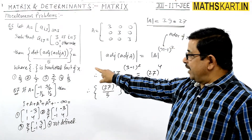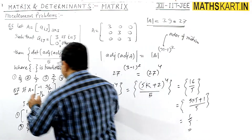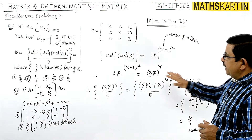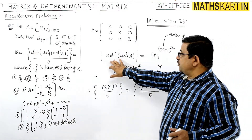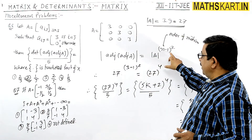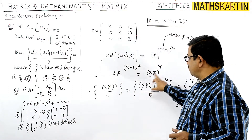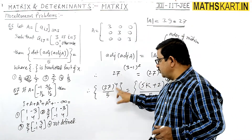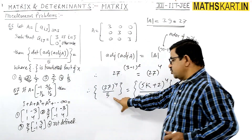Checking the answer: the fractional part of x equals 1/5, so the second option is correct. That particular value is 1 upon 5. To summarize: the formula is det(adj(adj(A))) = det(A)^((n−1)²) = 27 to the power 4, divided by 5, giving fractional part 1 upon 5.